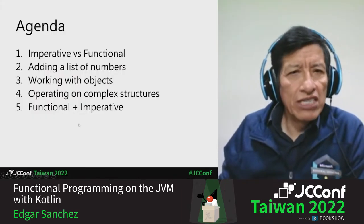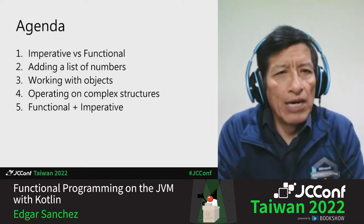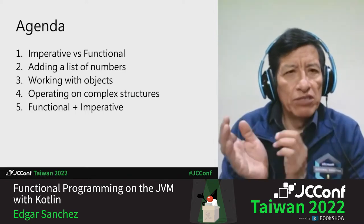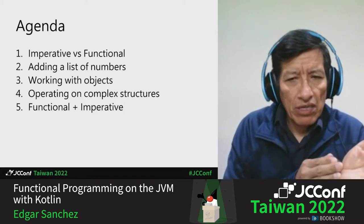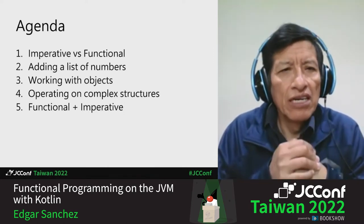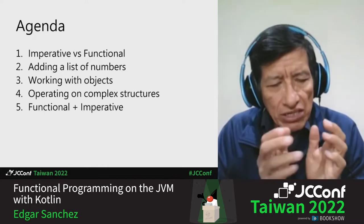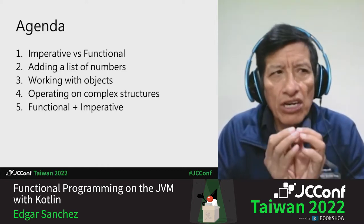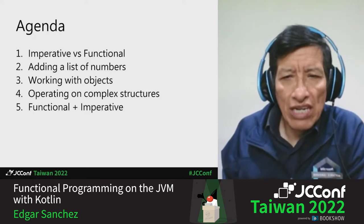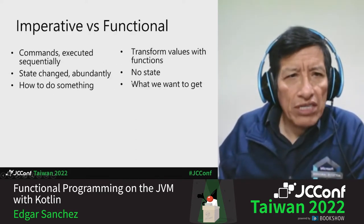I've got just a few slides here. I'll start talking about what's the difference between imperative programming and functional programming. And then all the other slides, as you see, are just code examples. So we'll be coding live here. Let's see how it goes.